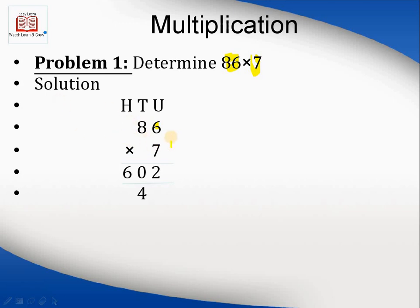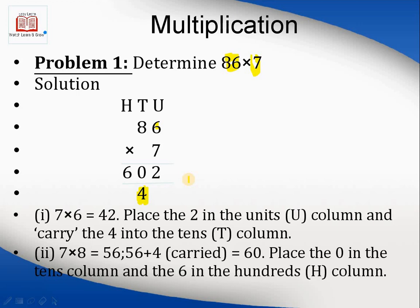The 7 is written in the units column. 7 multiplied by 6 is 42. 4 is written as carry, and 2 in the units column. 8 multiplied by 7 is 56, plus 4 carried is 60. So we have 602. This is the simplest case.